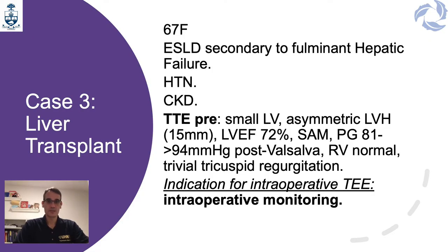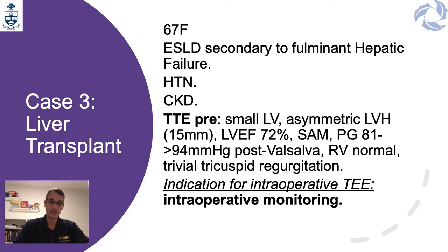The third case is a liver transplant patient — a 67-year-old female with end-stage liver disease secondary to fulminant hepatic failure, with a history of hypertension and chronic kidney disease. Pre-operative transthoracic echo showed a small left ventricle with asymmetric left ventricular hypertrophy, septum of 15 mm, normal LVEF, systolic anterior motion of the anterior mitral leaflet with pressure gradients post-Valsalva up to 94 mmHg, normal right ventricle, trivial tricuspid regurgitation, and no mitral regurgitation. The indication for TEE was the known high risk for LVOT gradients and SAM, as in the previous kidney transplant case.